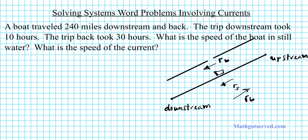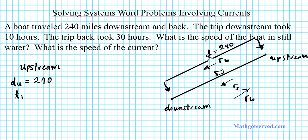We're going to be using this fact to set up our equations. This is the distance upstream or downstream — it makes no difference. You're covering exactly the same distance, which is 240 miles. Now let's set up our variables. For upstream: du is the distance upstream, equal to 240. tu is the time upstream — it took 30 hours. ru is the rate upstream. If you're going against the current, the rate upstream is going to be the rate of the boat minus the rate of the stream.